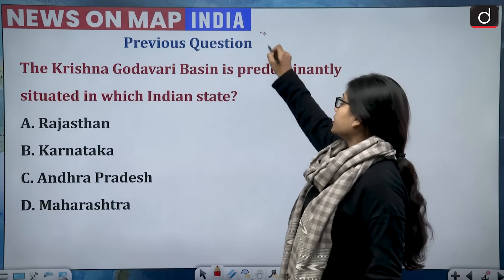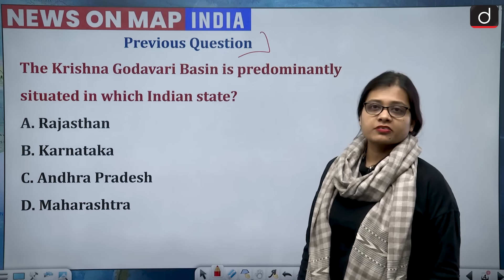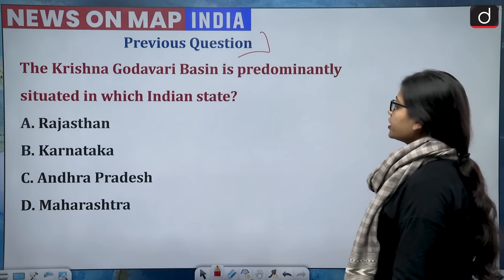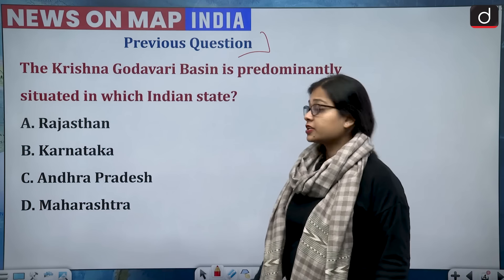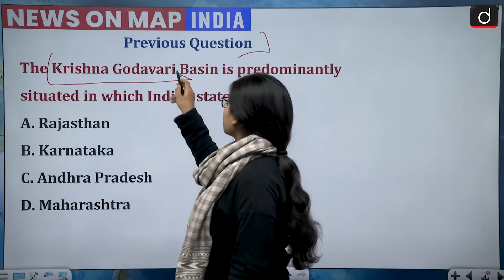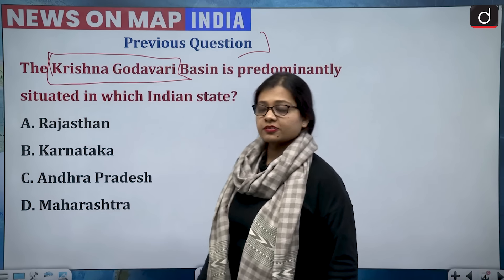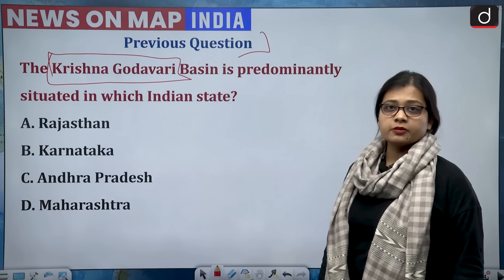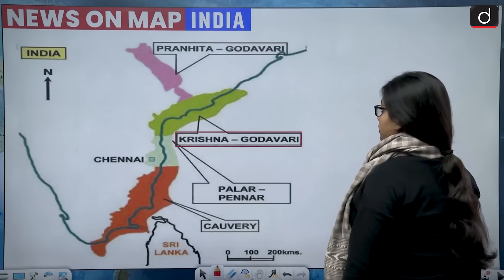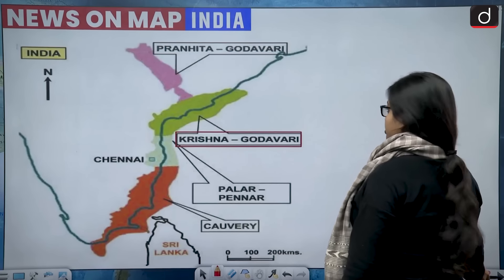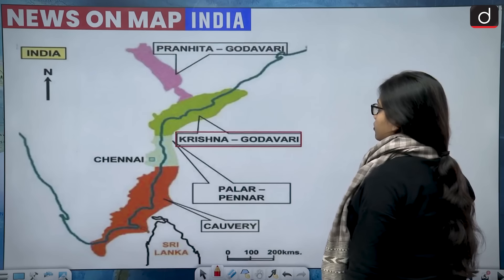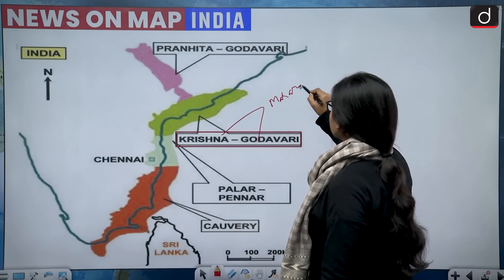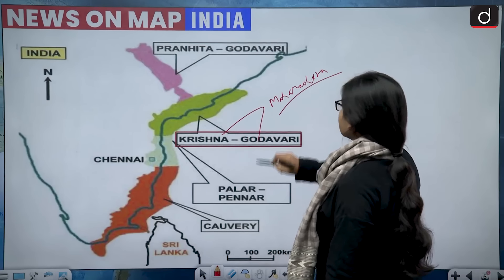The previous day's question — most of you answered it correctly. The question reads: the Krishna Godavari basin is predominantly situated in which Indian state? It is focusing on the Krishna Godavari river basin. The four options are Rajasthan, Karnataka, Andhra Pradesh, and Maharashtra. The Krishna and Godavari both rivers originate from Maharashtra.